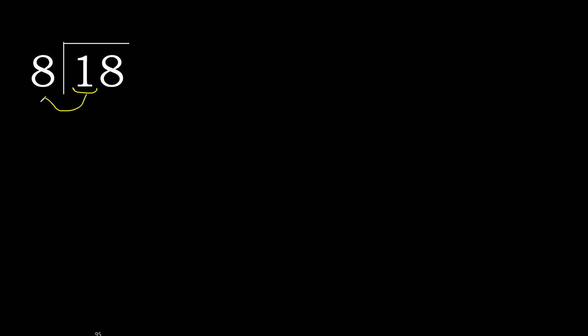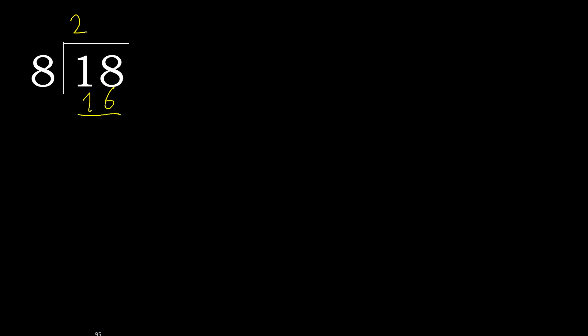18 divided by 8. 1 is less, therefore next. 18 is not less, therefore work with 18. 8 multiplied by which number is nearest to 18 but not greater? 8 multiplied by 3 is 24, which is greater. So multiplied by 2 gives 16. 18 minus 16 is 2.